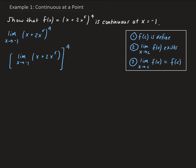From here, using another operation for limits, we can split this up into two limits. So we have the limit of x as x approaches negative 1, plus the limit of 2x to the fifth as x approaches negative 1, and all of this is raised to the fourth power.